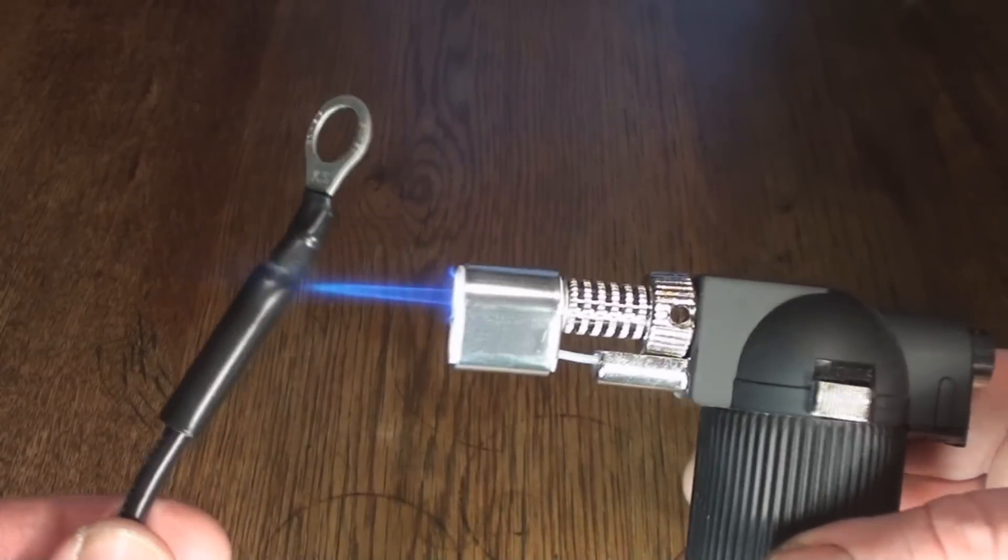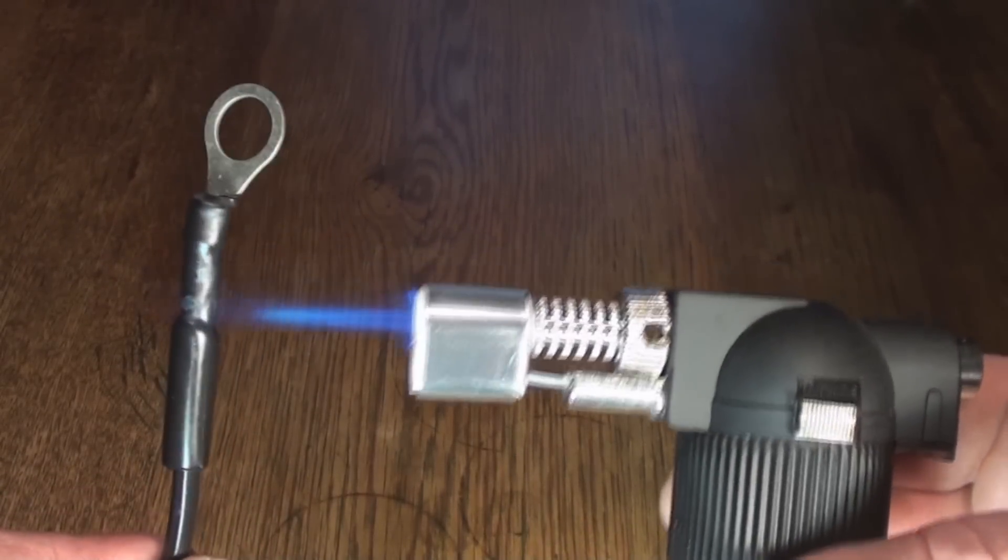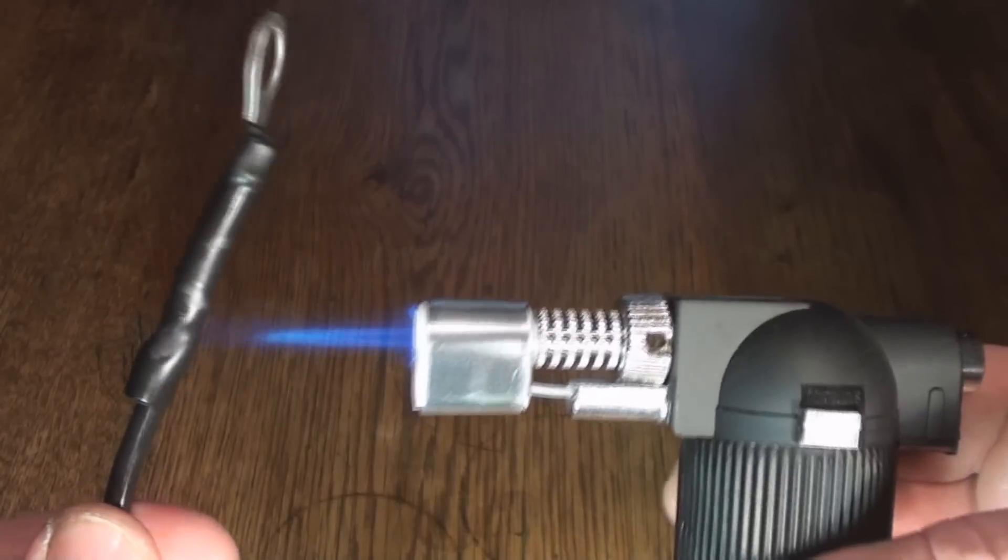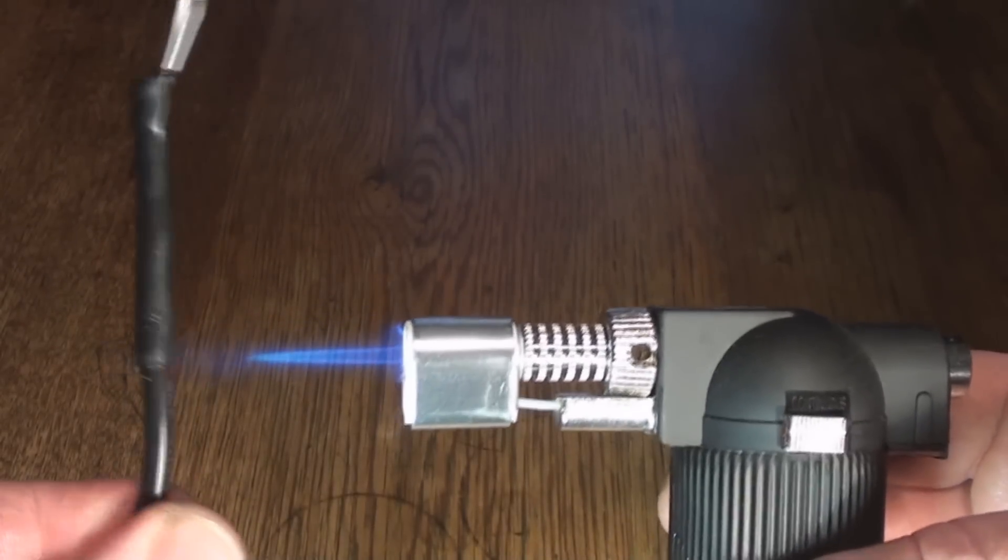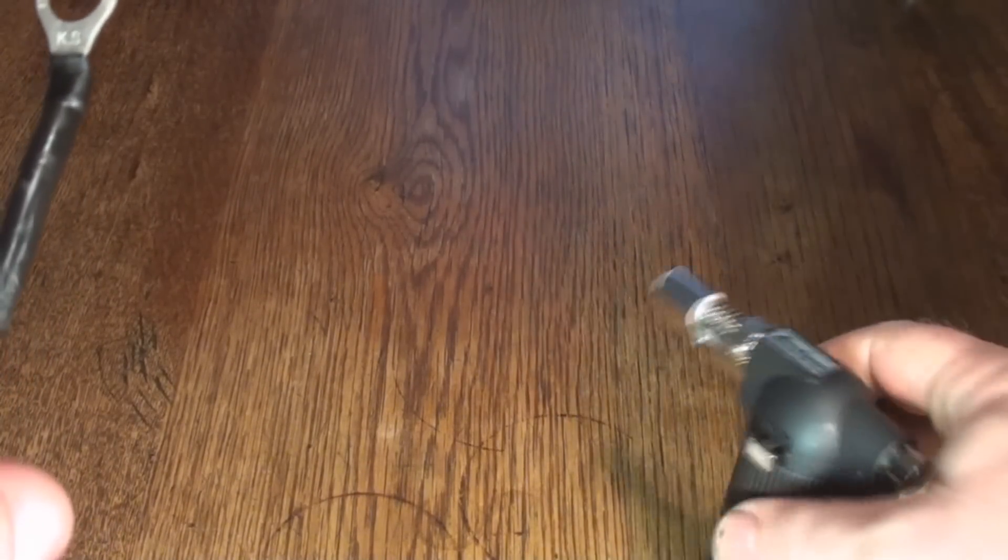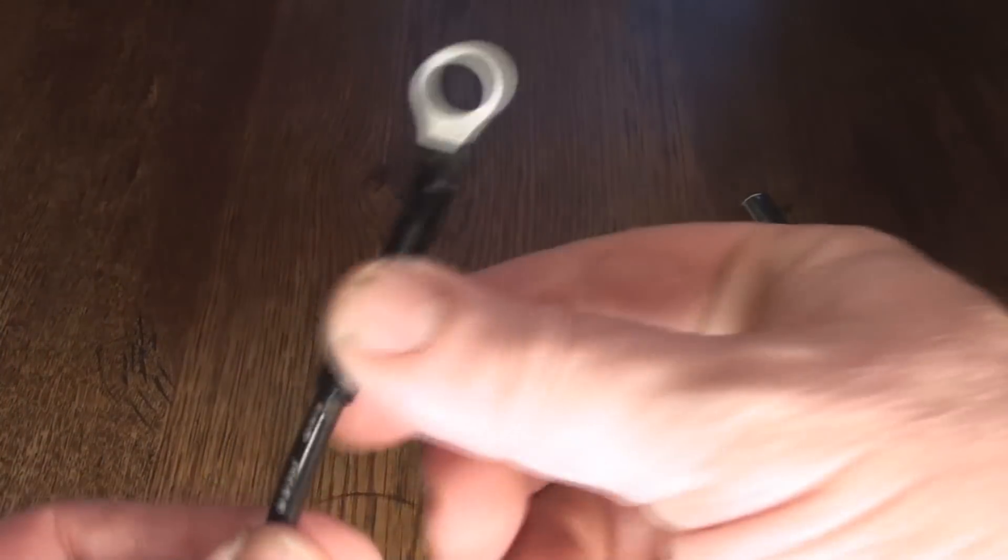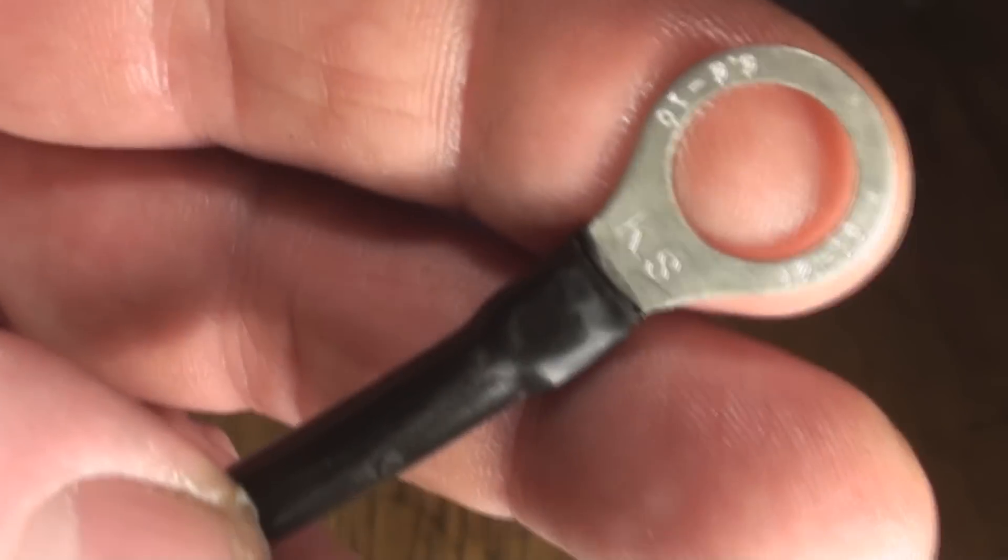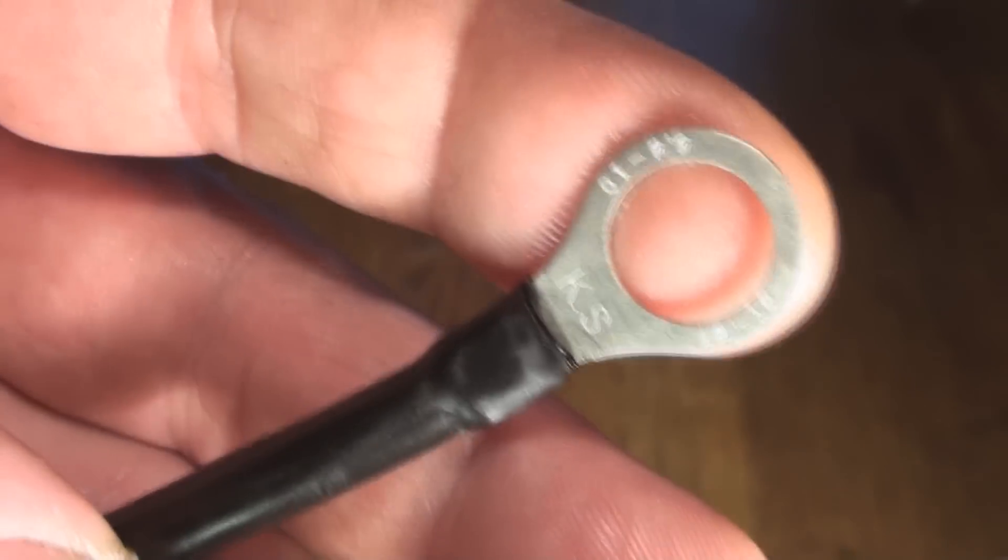And it will melt right on there as sweet as you please. And there you have. I've even overdone it a little bit. Whoops. You can see I've overdone it a little bit. A little bit of charring but just wipe that off. It's quite hot. And there we have a very reliable crimp connection.